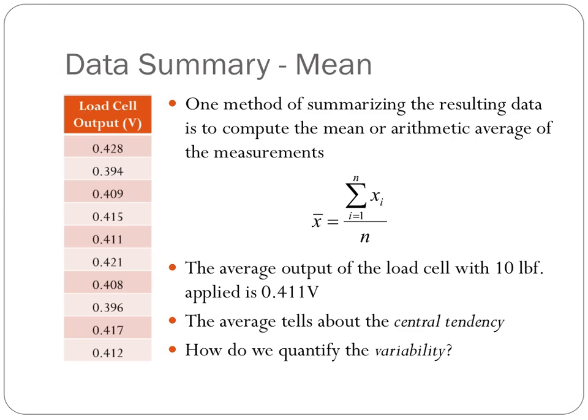From this process, I obtained 10 different voltage measurements for the same input value of 10 pounds force. One way to summarize this information would be to add all of the values up and divide by the total number of samples taken, which in this case is 10, to obtain the mean or average value of all of the outputs. Of course, this tells us about the likely output when we apply 10 pounds of force to the load cell, but it tells us nothing about the variability in the measurements.